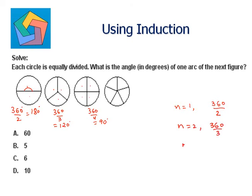For n equals 3, n being the number of the figure—first figure, second figure, third figure—I have 360 by 4. So for n equals k, the pieces will be 360 by k plus 1. Sorry, the angle will be 360 by k plus 1.